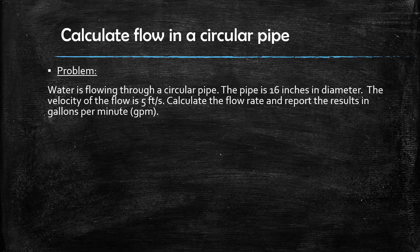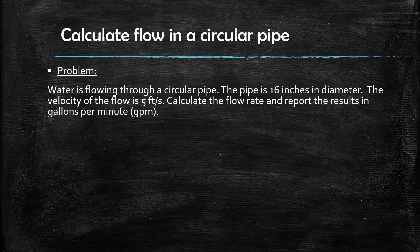The question reads, water is flowing through a circular pipe. The pipe is 16 inches in diameter. The velocity of the flow is 5 feet per second. Calculate the flow rate and report the results in gallons per minute.